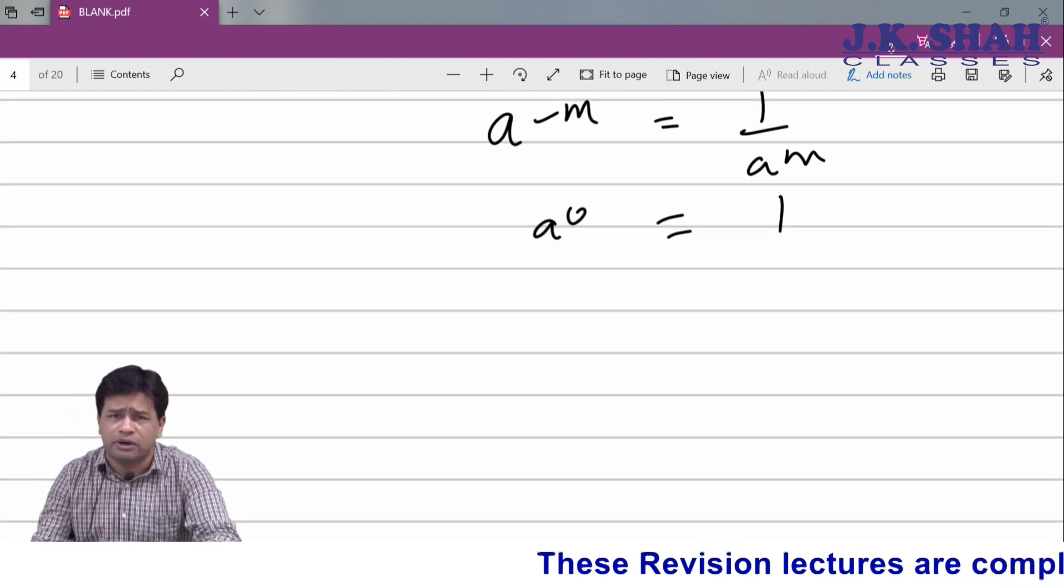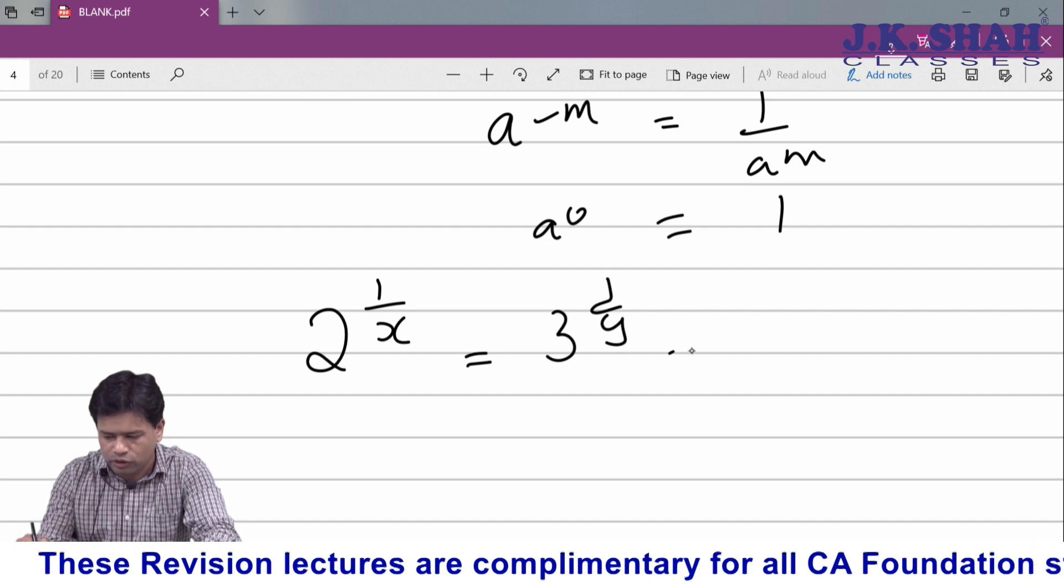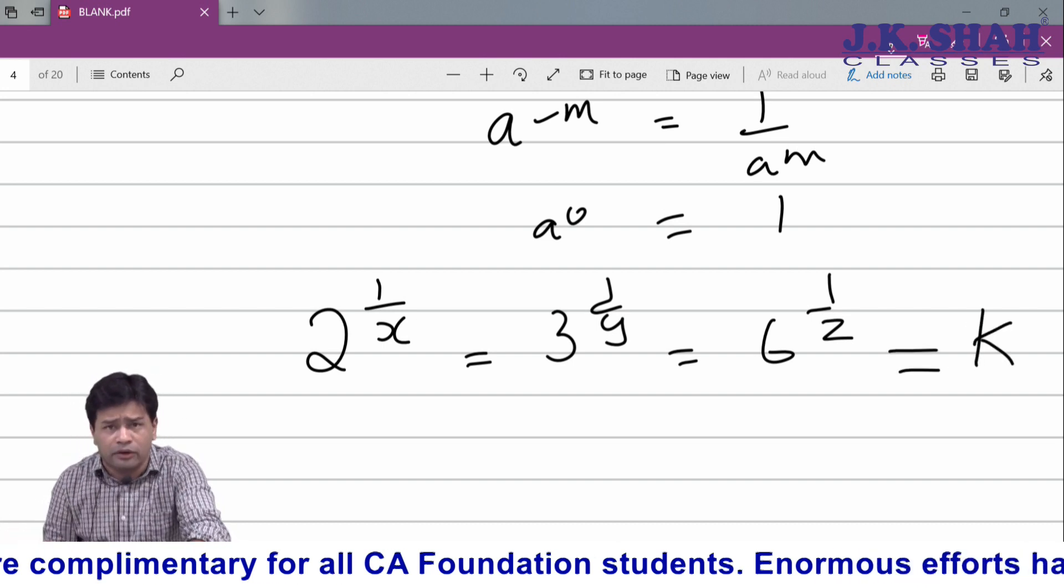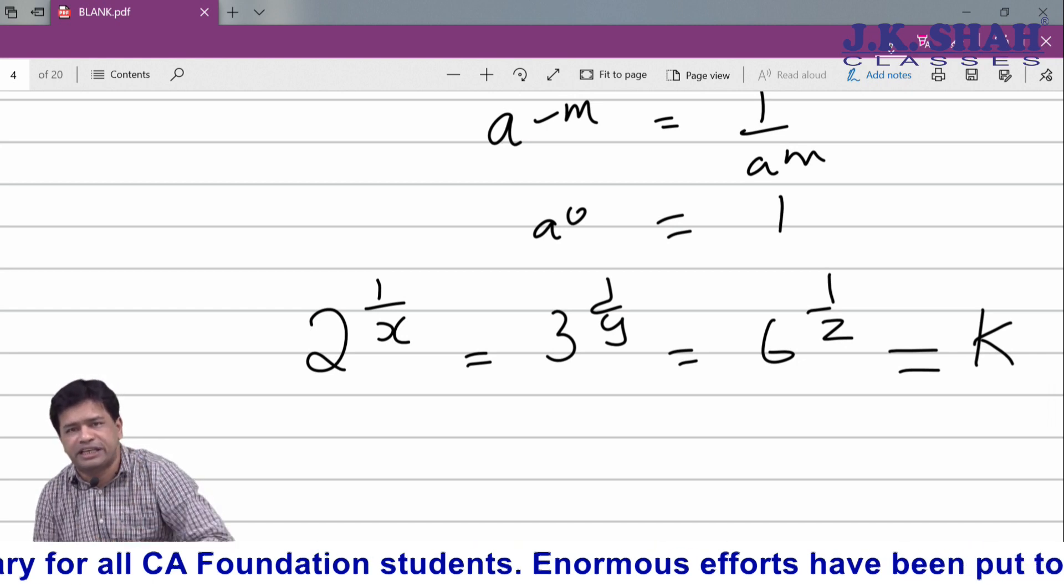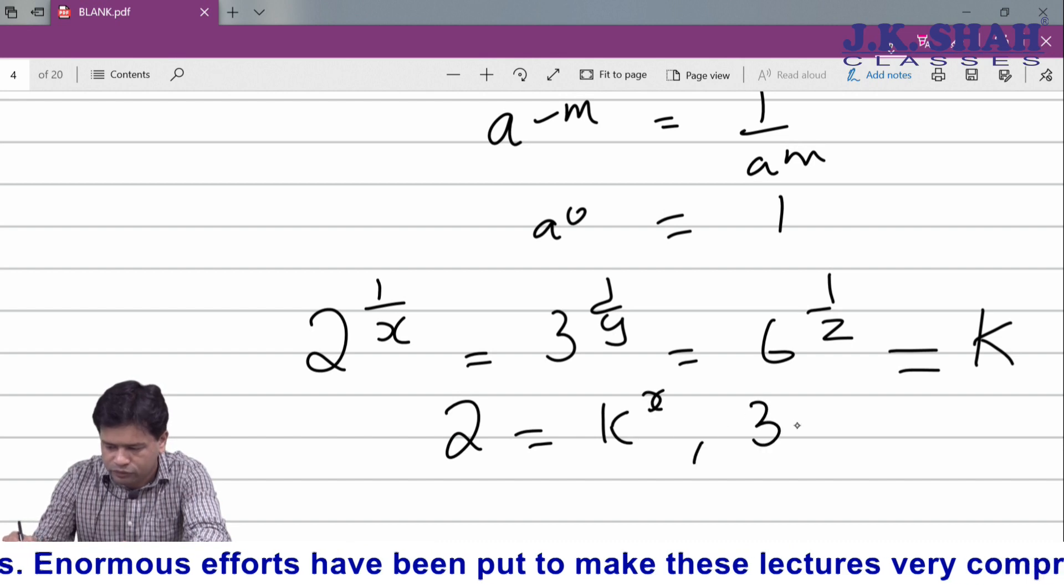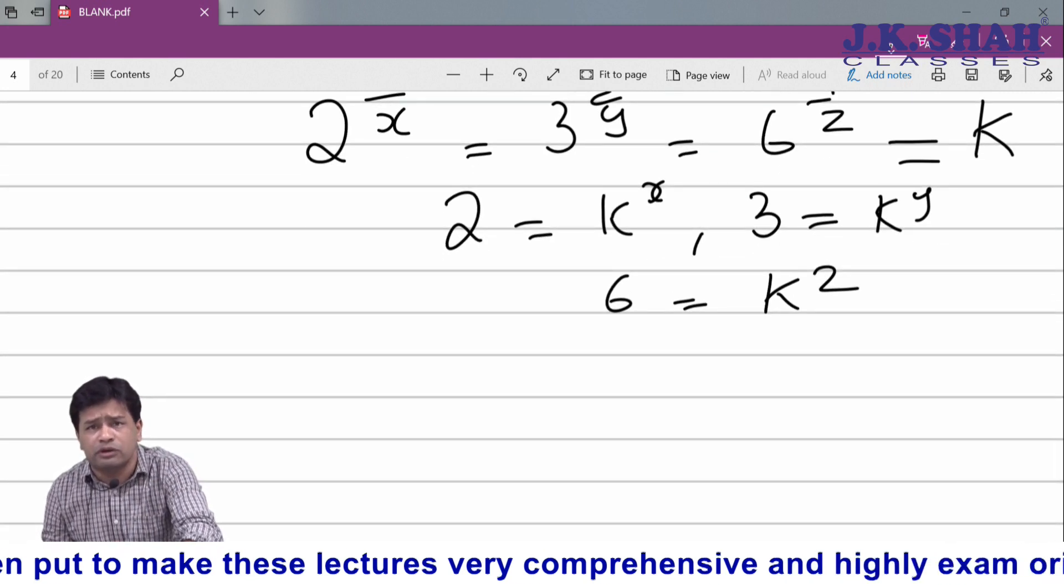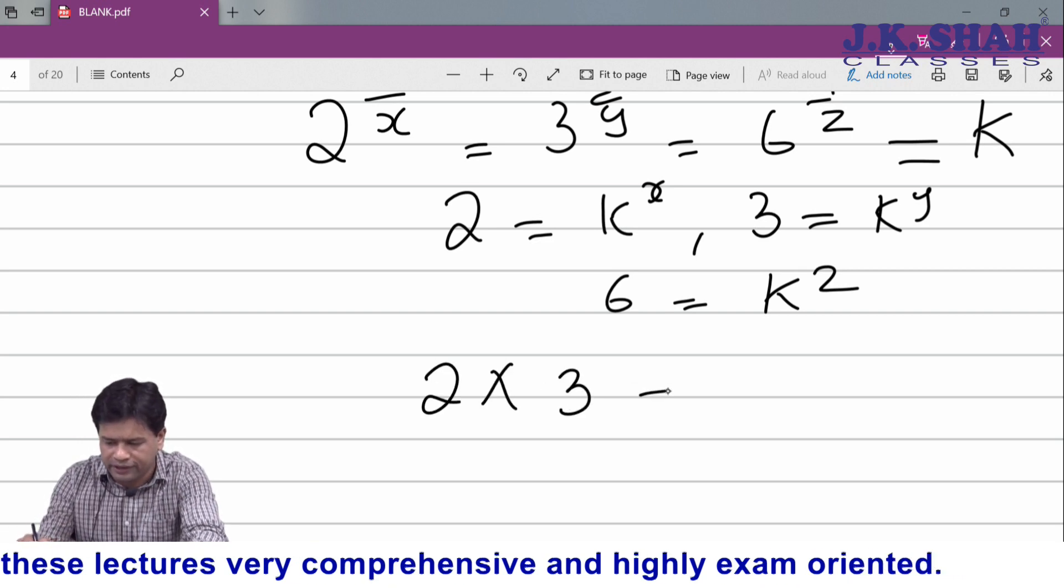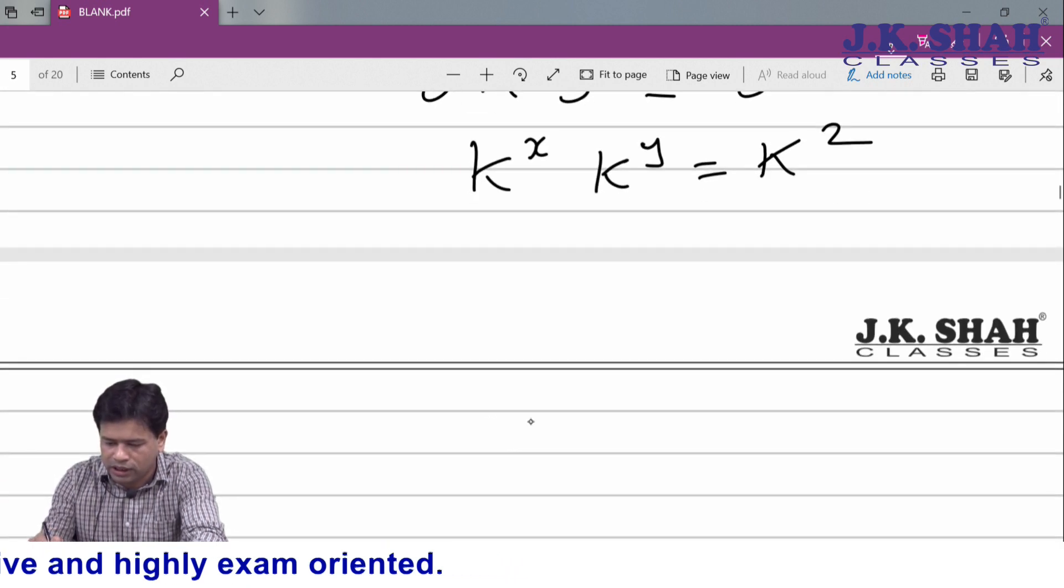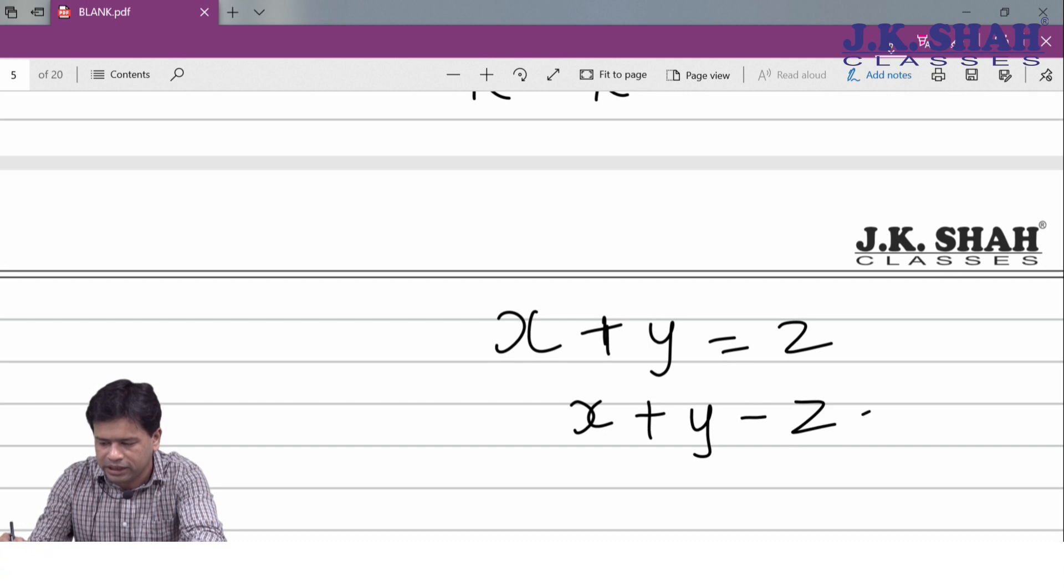In indices, if you see past papers, there are questions where three conditions are equal to each other. Say 2 raised to 1 upon x equals 3 raised to 1 upon y equals 6 raised to 1 upon z, and conditions are given in the options. We solve such questions by assuming as k. Remember, if I take a fraction on the opposite side it becomes an integer; if I take an integer on the opposite side it becomes a fraction. So 2 raised to 1 upon x becomes k raised to x, 3 becomes k raised to y, 6 becomes k raised to z. Now no other information will be given - we have to correlate the numbers: 2 into 3 equals 6. So k raised to x into k raised to y equals k raised to z, which means x plus y equals z. The condition we have is x plus y minus z equals 0.